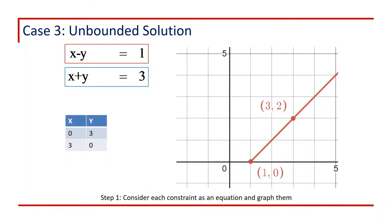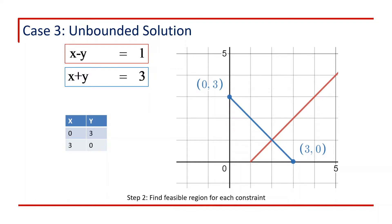Now consider the second constraint, giving the equation x plus y equals 3. Putting x equals 0 gives y equals 3, and putting y equals 0 gives x equals 3. So the points are (0, 3) and (3, 0). We draw a line connecting these two points, shown in blue.